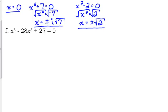Alright, let's look at f. We have x to the sixth minus 28 x cubed plus 27 is equal to 0. So this is another quadratic form, except this time it is x cubed that we are going to multiply together to give us x to the sixth. And let's see here. Negative 27 times negative 1 gives us positive 27. And when we add those, we get negative 28.